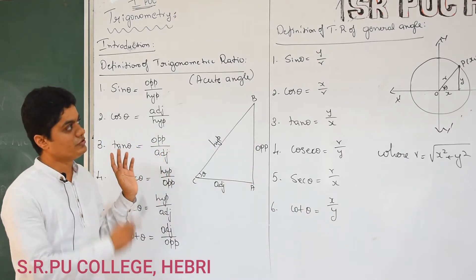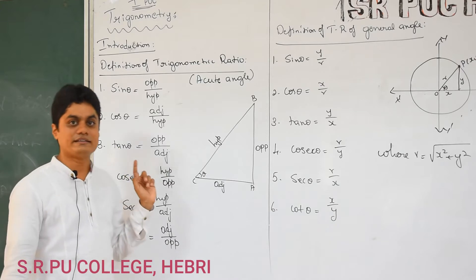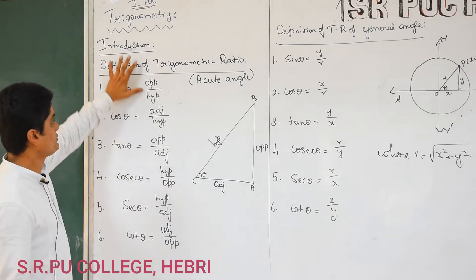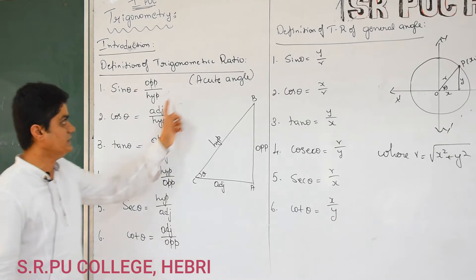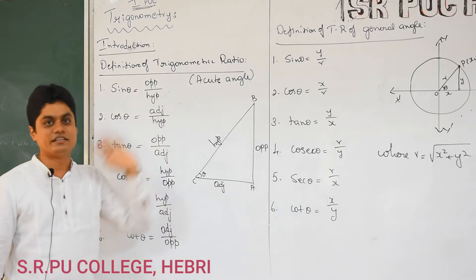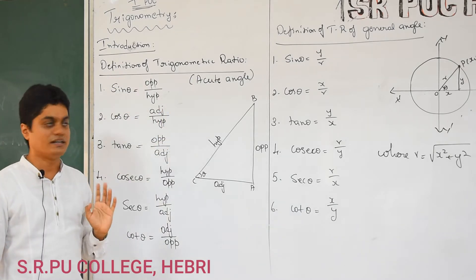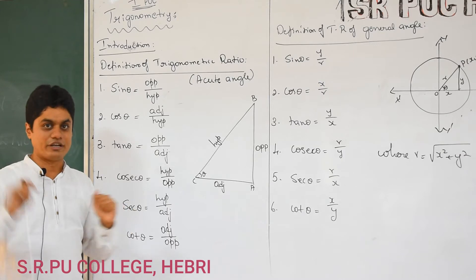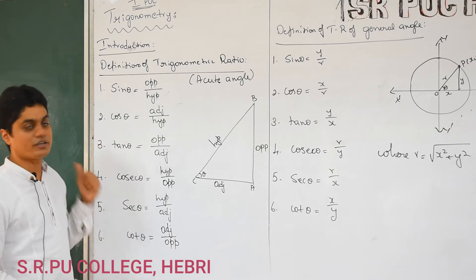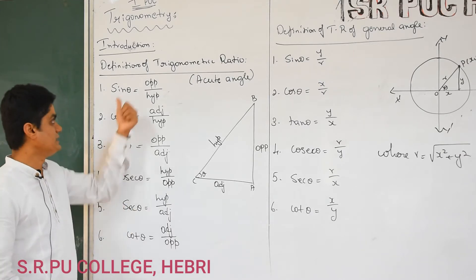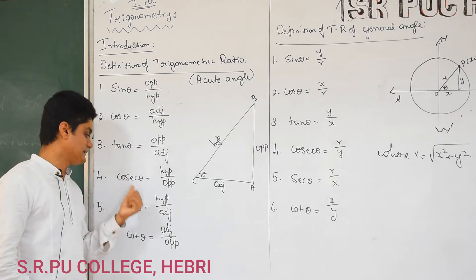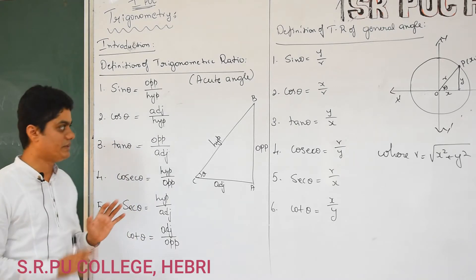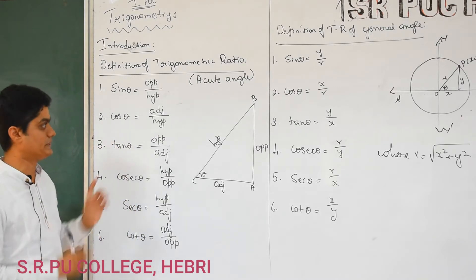In the next class I will teach you what is there in 11th standard trigonometry. So as a first topic in trigonometry, in 10th standard you will learn its definition. How many ratios will you learn? Six ratios. Which are the six trigonometric ratios? Sin theta, cos theta, tan theta, cosecant theta, secant theta, and cot theta. So I am just recalling, remember that.